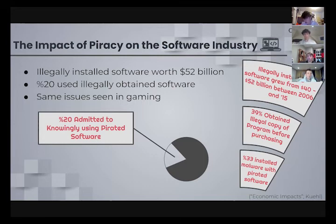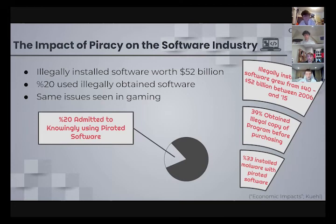A 1% decrease in software piracy yields a 0.2% increase in GDP per capita. A 10% decrease in software piracy would generate $142 billion in direct economic growth over four years. Similar issues have been seen in the gaming industry, which already has several issues fitting into traditional copyright law. As copying is seen as acceptable to a point in the gaming industry, copyright law is a gray zone. A free-to-try model has helped reduce piracy rates in gaming, but many issues still need to be solved.